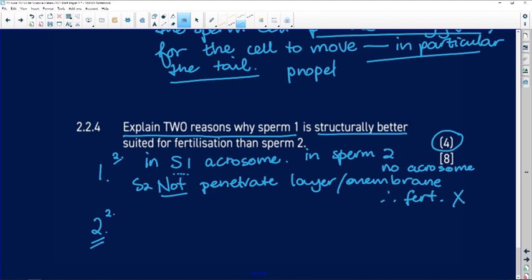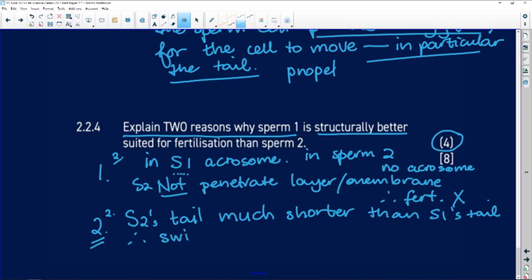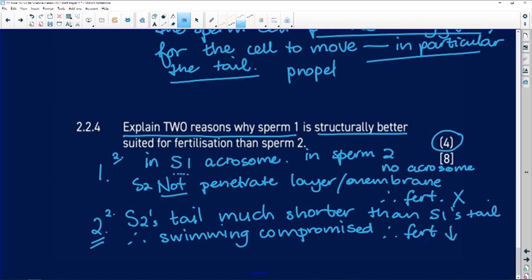The second reason we could say sperm two's tail is much shorter than sperm one's tail. And therefore, it wouldn't be as good a swimmer. So swimming would be compromised. Maybe it's going to swim a lot slower. Maybe it's going to swim not as directly. And so we can see that, therefore, fertilization is less likely to take place. Separate your two reasons so you can then check your answer to make sure that you've actually given the marker two reasons. Anything that you can do to make this experience for your marker clear, do it.